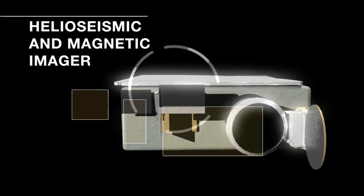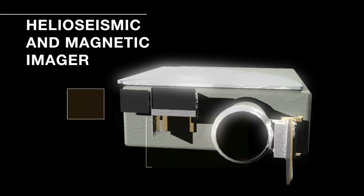HMI is the helioseismic and magnetic imager. Very long words for something that's very useful to look at on the Sun.